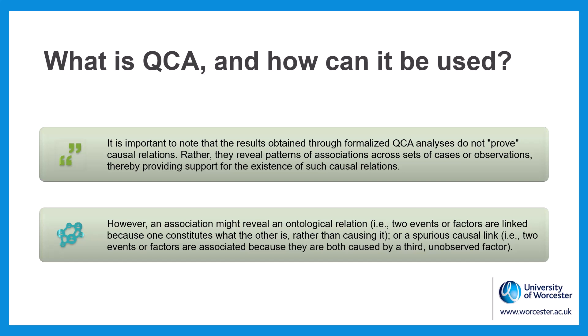It is also important to note that the results obtained through formalized QCA analysis do not actually prove causal relations. Rather, they reveal patterns of associations across sets of cases or observations, thereby providing support for the existence of such causal relations. However, an association might reveal an ontological relation — for example, two events or factors are linked because one constitutes what the other is rather than causing it — or a spurious causal link, where two events or factors are associated because they are both caused by a third unobserved factor.